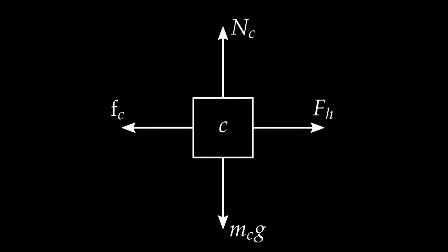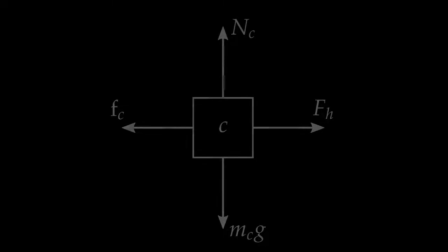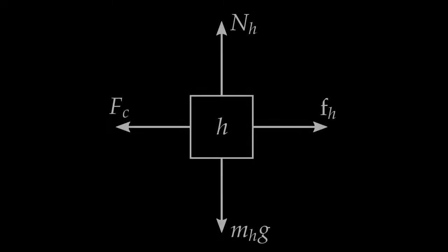In principle, I could now write Newton's Second Law for the cart and begin an analysis. But I'm more interested in drawing free body diagrams today, so instead I'll draw a free body diagram for the horse. I do the same as I did for the cart — I draw a small box labeled H to represent the horse.